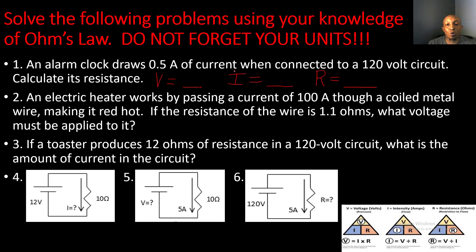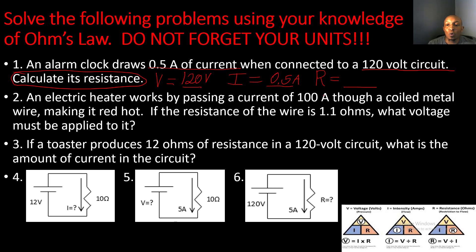Problem one: an alarm clock draws 0.5 amps of current when connected to a 120-volt circuit. We're asked to calculate its resistance. We know resistance equals voltage divided by current: R = V ÷ I. So we take 120 volts divided by 0.5 amps, which gives us a resistance of 240 ohms.